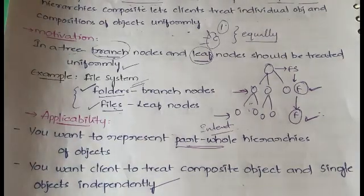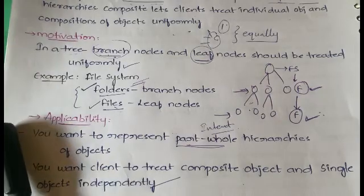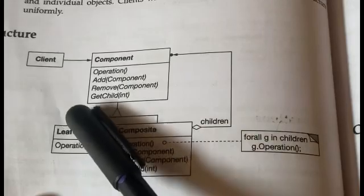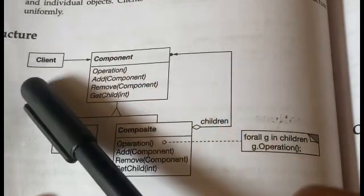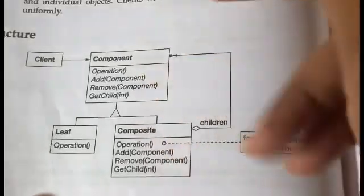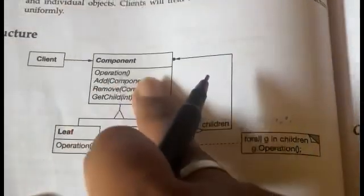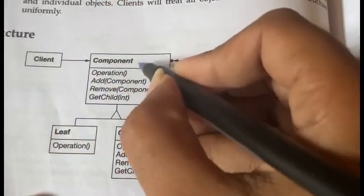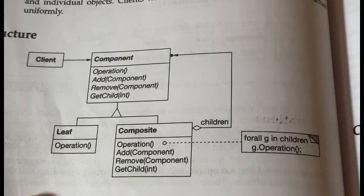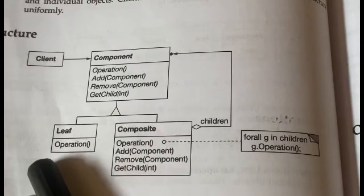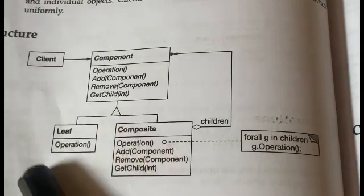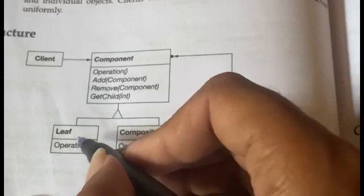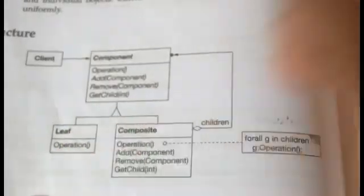Now let's look at the structure and participants of the Composite design pattern. Here you have the Client, which manipulates objects in the composition using the Component interface. The Component declares the interface for all objects participating in the composition. The Leaf represents all leaf objects in the composition and cannot have any children, since it is the last level of the tree.